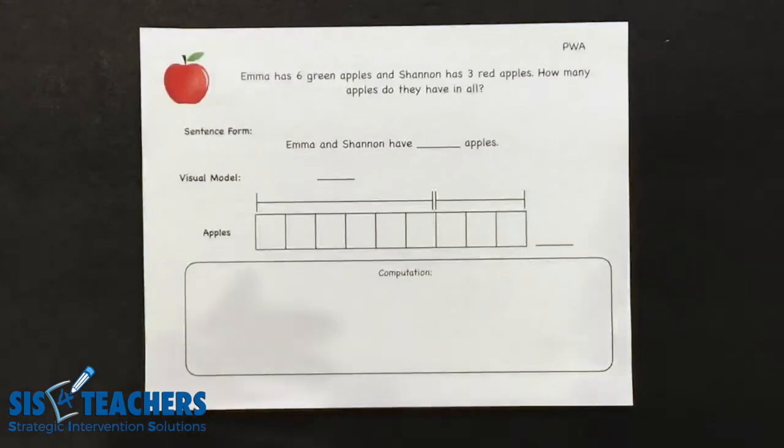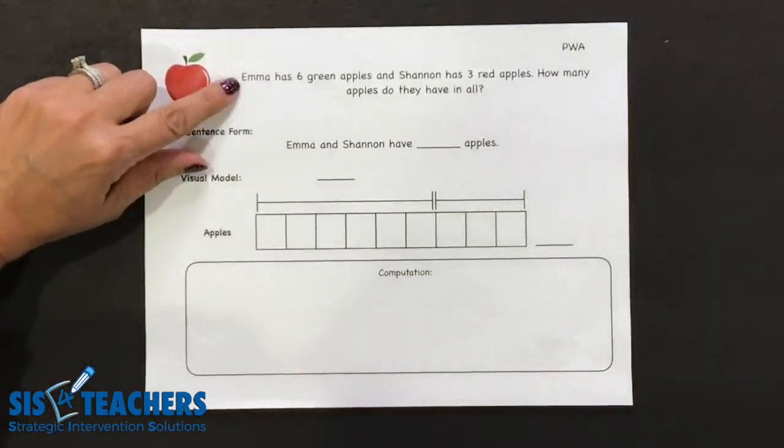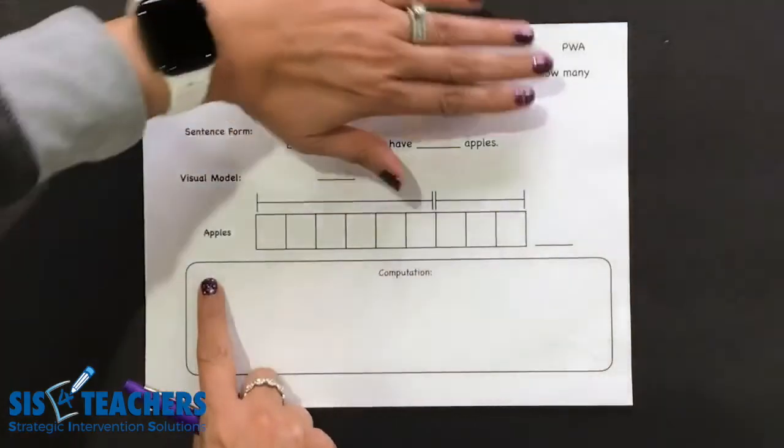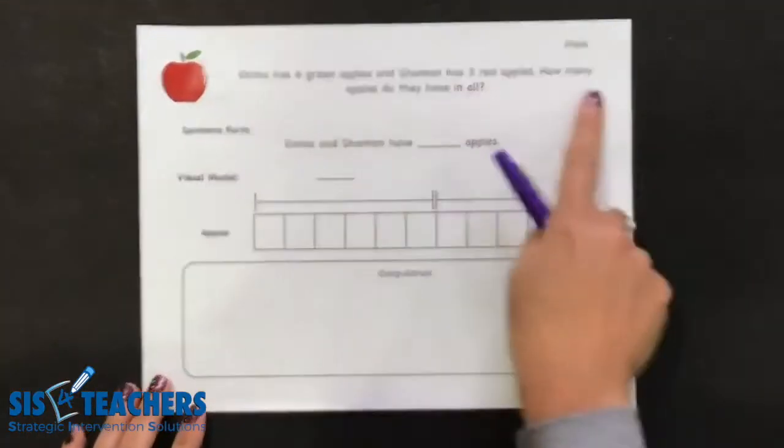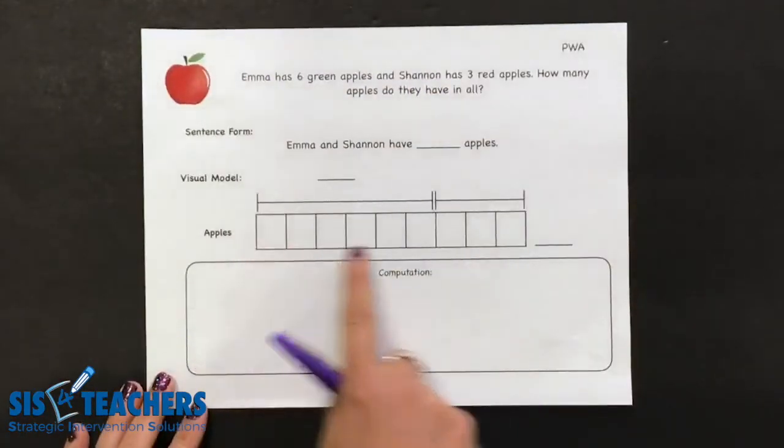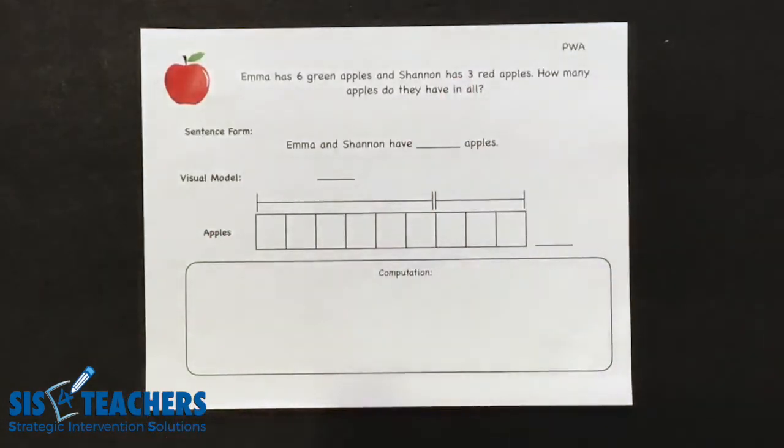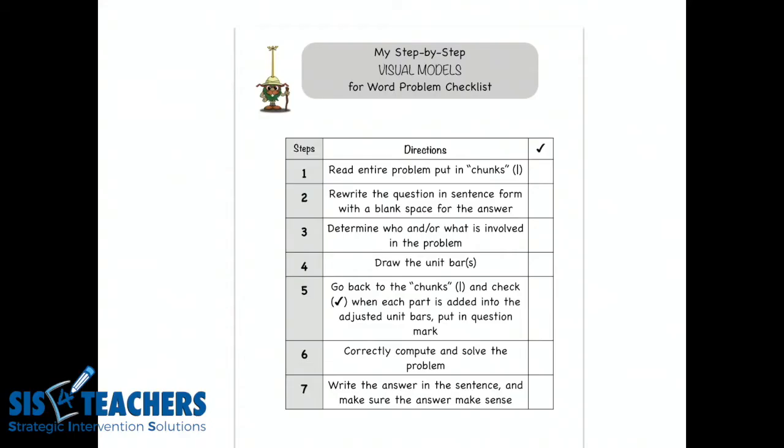I could cover up the word problem here and kids will be able to read a story problem from what is drawn based on the words. We're going to go over our step-by-step checklist, a seven-step process for first graders to work through the year and hopefully be more independent by the end.